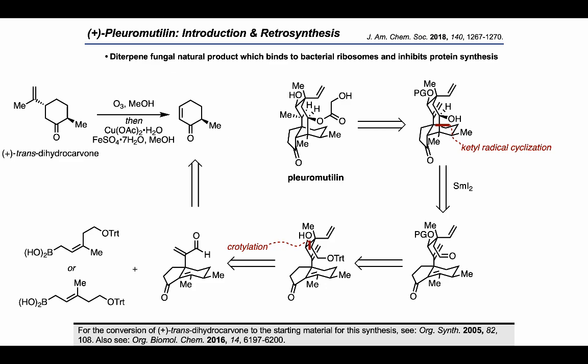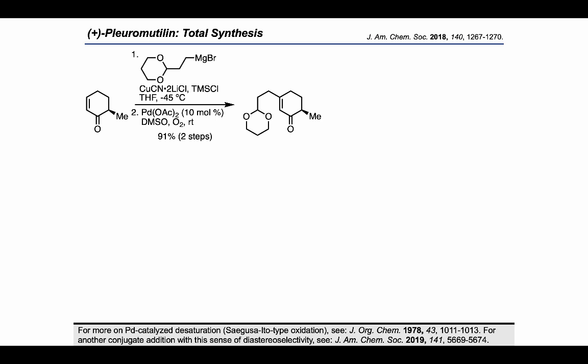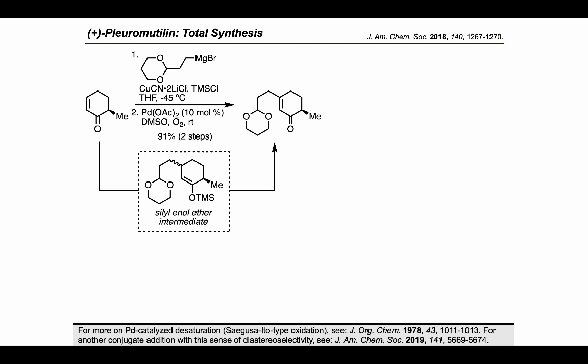Starting from this alpha-methylated cyclohexenone, the authors carried out a conjugate addition using an organocuprate entrapped with TMS chloride to get this silyl enol ether, which could be used in a Saegusa-Ito-type desaturation reaction with palladium(II) and oxygen in DMSO to get this beta-functionalized cyclohexenone.